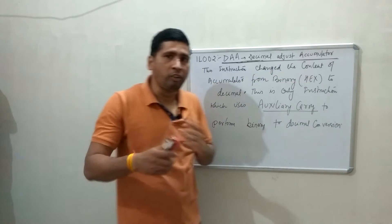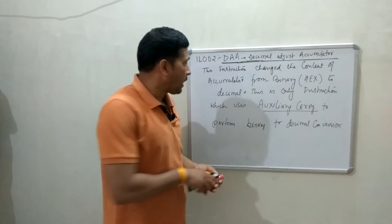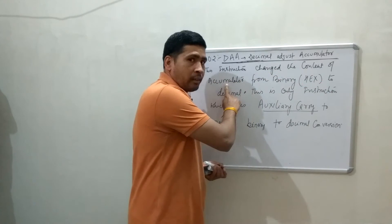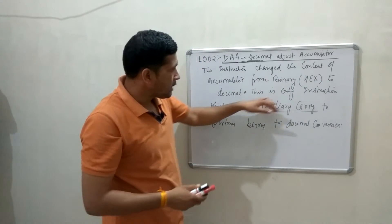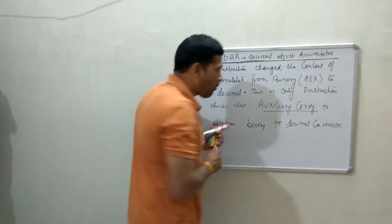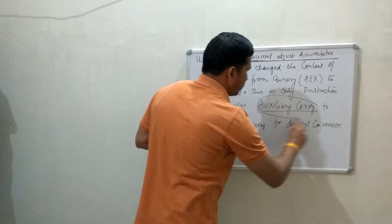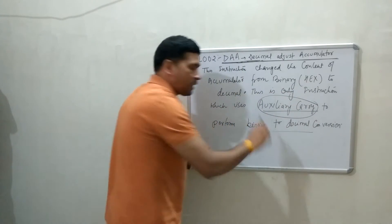Basically this instruction converts hexadecimal value into decimal value. Content of Accumulator from binary to hexadecimal. This is only instruction which uses auxiliary flags to perform convergence between binary to decimal.